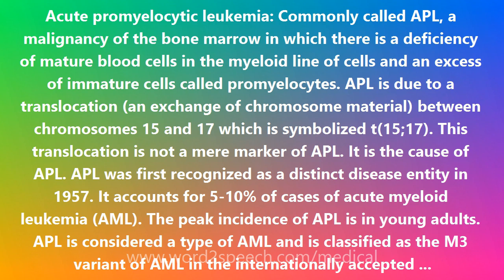The translocation creates a PML/RARA fusion gene. It produces a chimeric protein that arrests the maturation of myeloid cells at the promyelocytic stage. It reduces terminal cell differentiation, and this leads to the increased proliferation of promyelocytes.